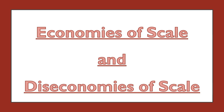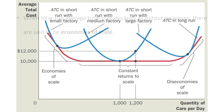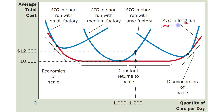Hello students, today's topic is economies of scale and diseconomies of scale. When long run average total cost declines as output increases, there are said to be economies of scale. In this figure you can see the average total cost in the long run — this is the long run average total cost curve.